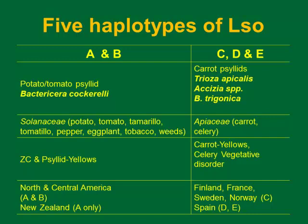Haplotype C was first reported by Dr. Ann — I don't remember your last name — in Finland. It's associated with the carrot disease, and it's transmitted by the carrot psyllid, I believe it's a triozid — correct me if I'm wrong. Later on, Sweden, Norway, and France also found haplotype C associated with the carrot disease.